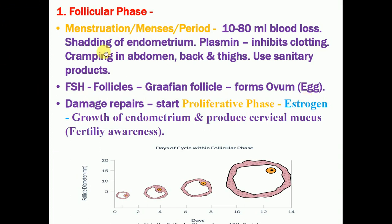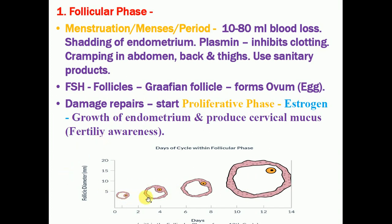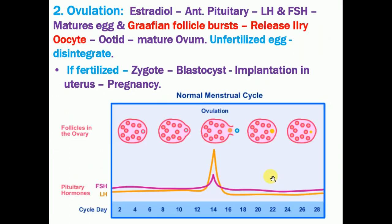In the follicular phase, follicles develop because of FSH — follicle stimulating hormone — which stimulates the follicles. Out of these, one follicle becomes fully matured and is called the Graafian follicle, which produces the egg. After menstruation, the damage is repaired and the proliferative phase begins in the uterus. The estrogen hormone secreted by the follicle is helpful for the growth of the endometrium as well as for the production of cervical mucus in the cervix, which can indicate fertility awareness in women.